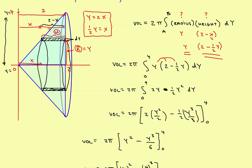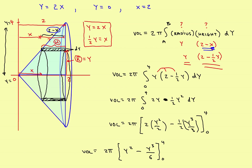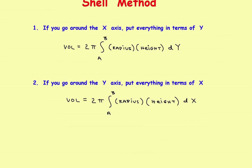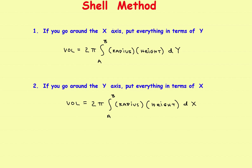It just happens to be the same answer in this case, but that won't always be true. Remember: if you're finding the volume around the x-axis, put the entire thing in terms of y; if around the y-axis, put everything in terms of x. The only way to get the radius and height is to draw a shell and read the distances off your picture. We'll look at more examples in other videos.